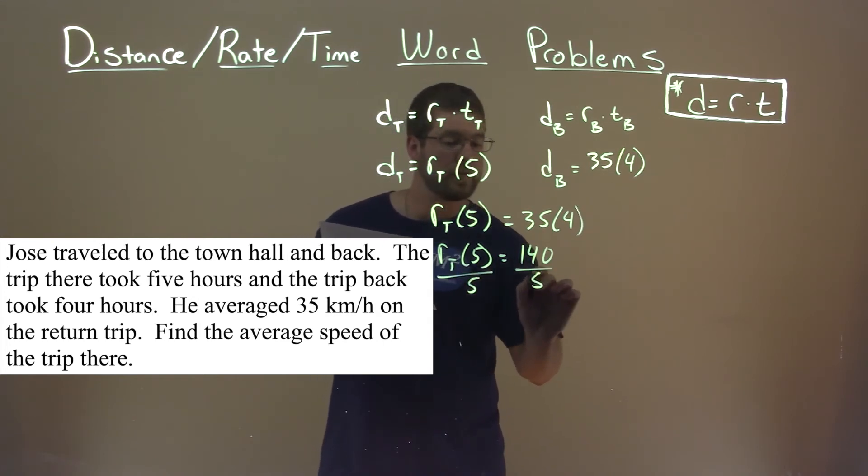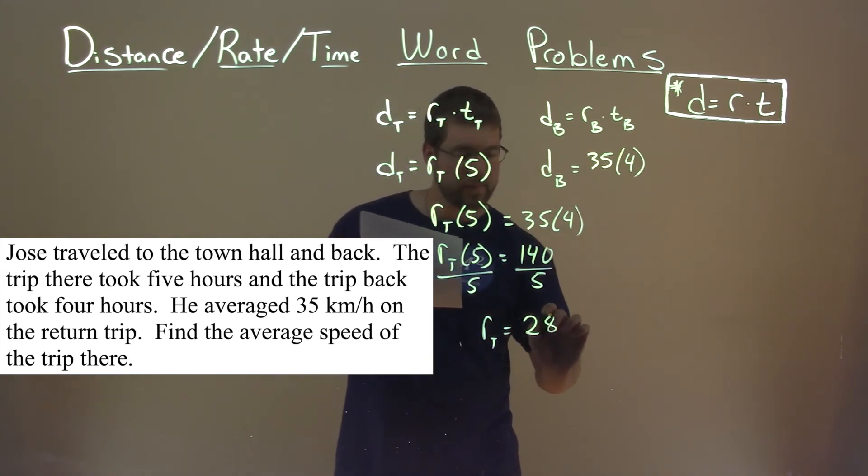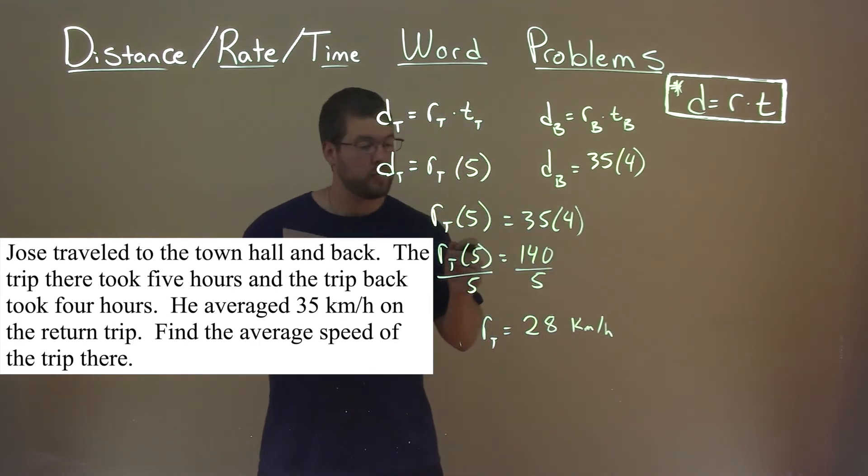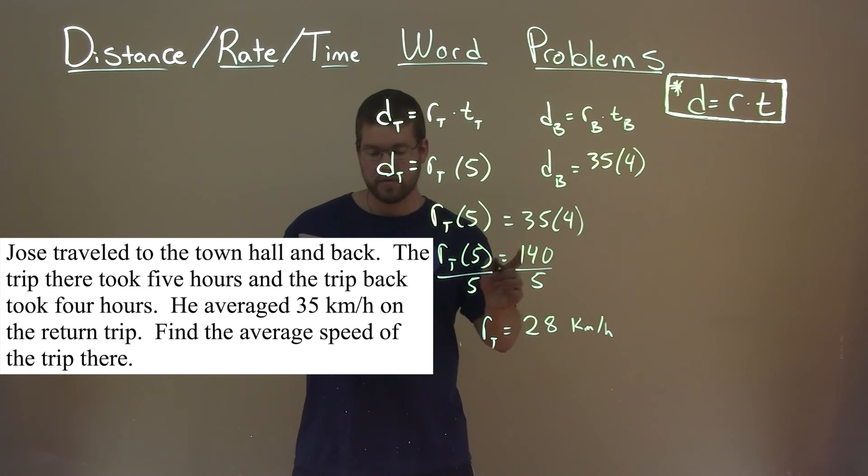Divide five to both sides. And we get the rate there is equal to 140 divided by five, which is 28. In our units, it's kilometers per hour. So the average speed of the trip there was 28 kilometers per hour.